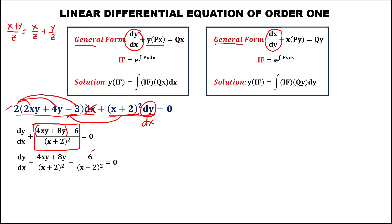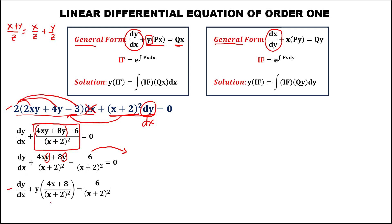We transpose the non-y term to the other side — this is our Q(x). So we have dy over dx, then factor out y: this becomes dy over dx plus y times (4x plus 8) over (x plus 2)² equals 6 over (x plus 2)². This is P(x) and this is Q(x), giving us dy/dx plus y·P(x) equals Q(x). We can now find the integrating factor.